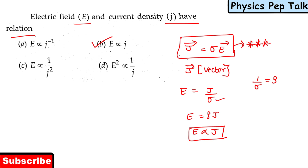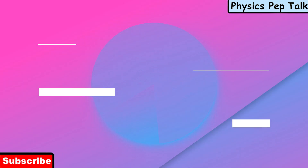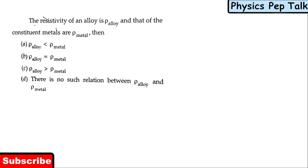The next question: the resistivity of an alloy ρ_alloy and that of the constituent metal ρ_metal — which of these statements is true?